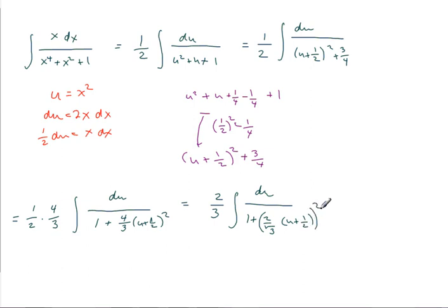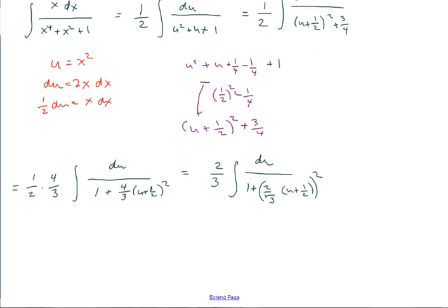And now, you should recognize this as an arctan function. Let's give ourselves a little bit more room. So, that's going to be an arctan. So, this is 2 thirds. Let me leave a little space here for the constant. And arctan of 2 over the square root of 3 times u plus 1 half plus c.